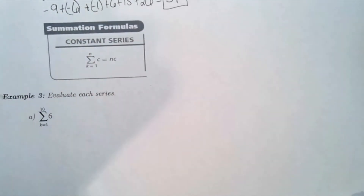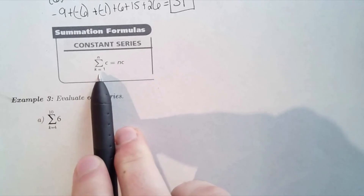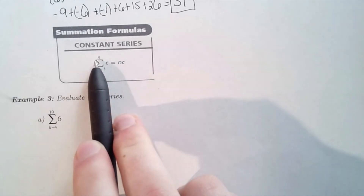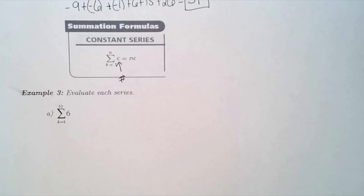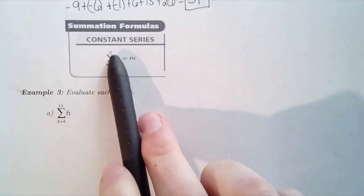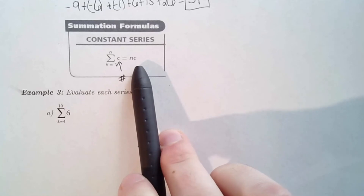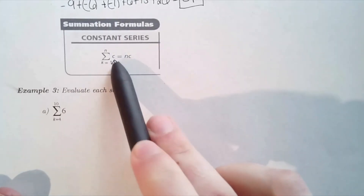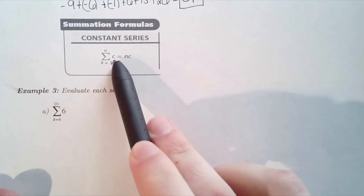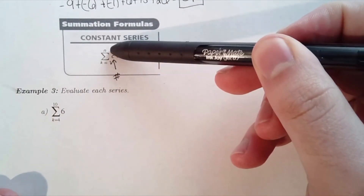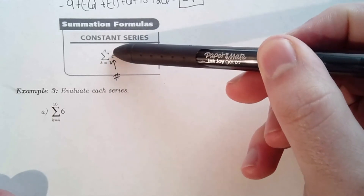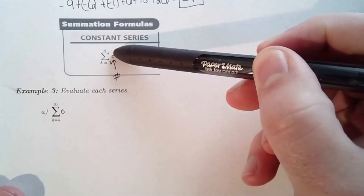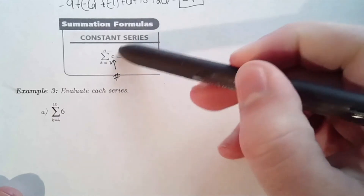There's a useful rule: if you take the sum from k equals 1 to n of a constant c — meaning there's no k in the formula — then every term equals that constant, and you're adding it n times. Repeated addition is just multiplication, so the result is n times c.